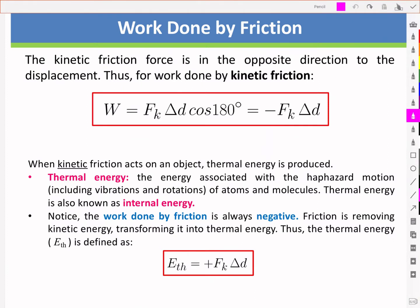The work due to friction is always negative because the angle between the displacement delta d and the force of the kinetic friction are always in opposite directions, and so the phi or the angle is 180 degrees and the cos of 180 degrees is a negative one.